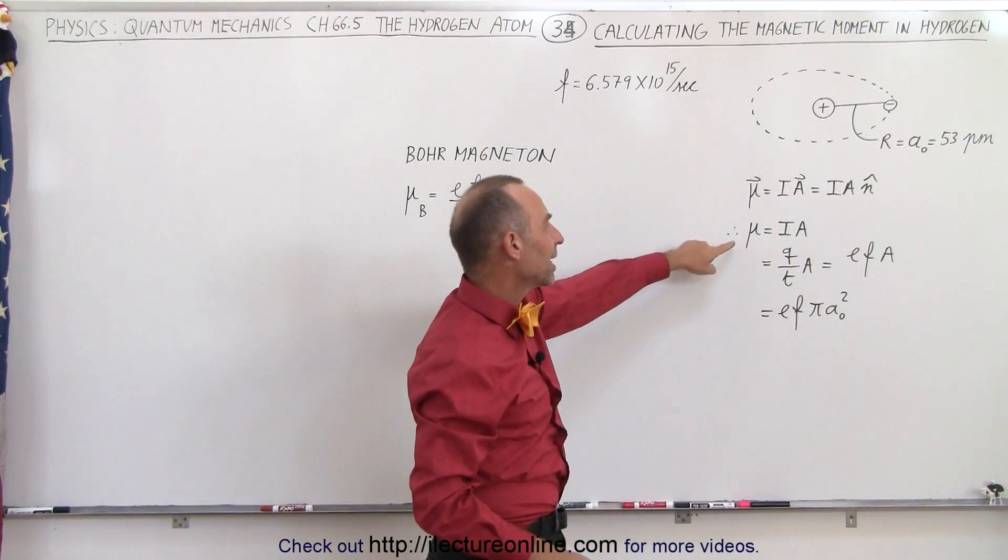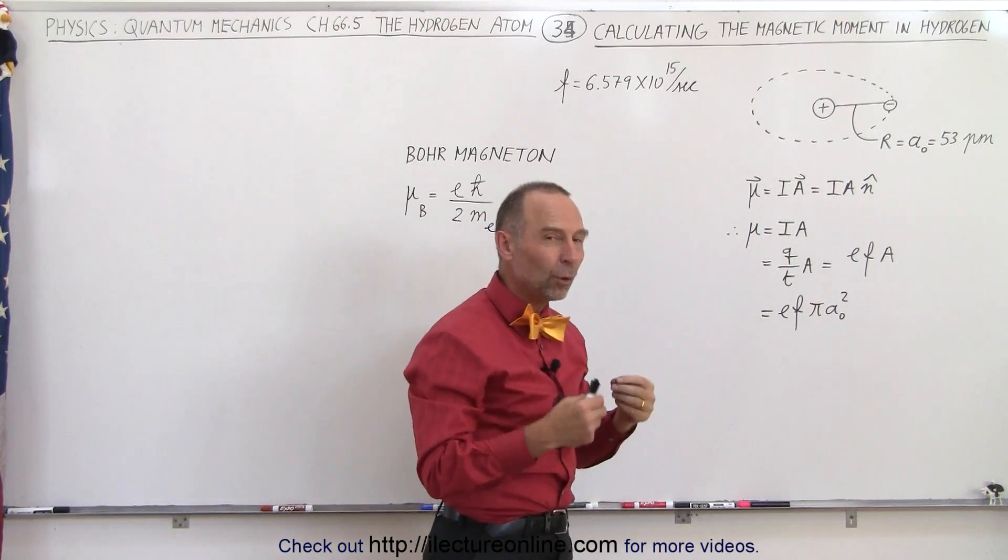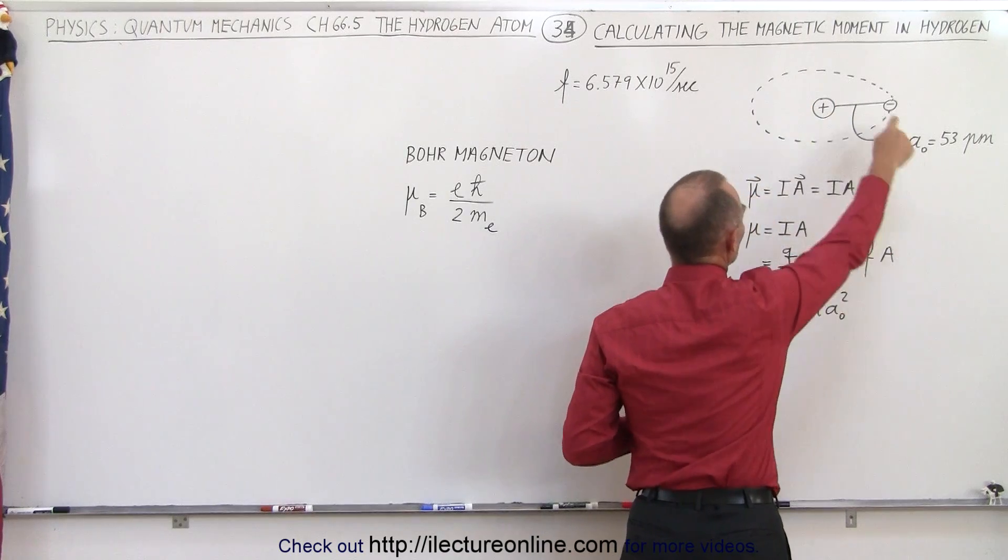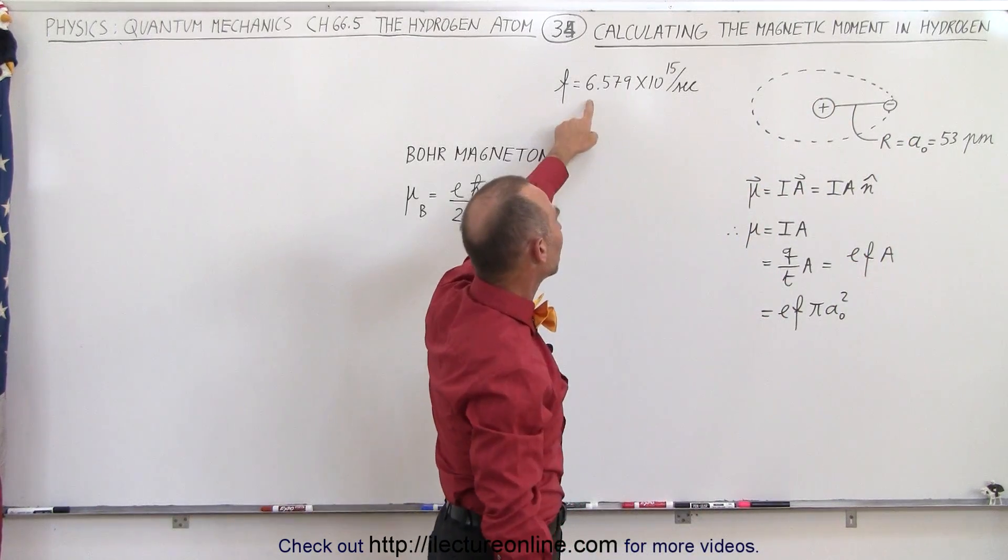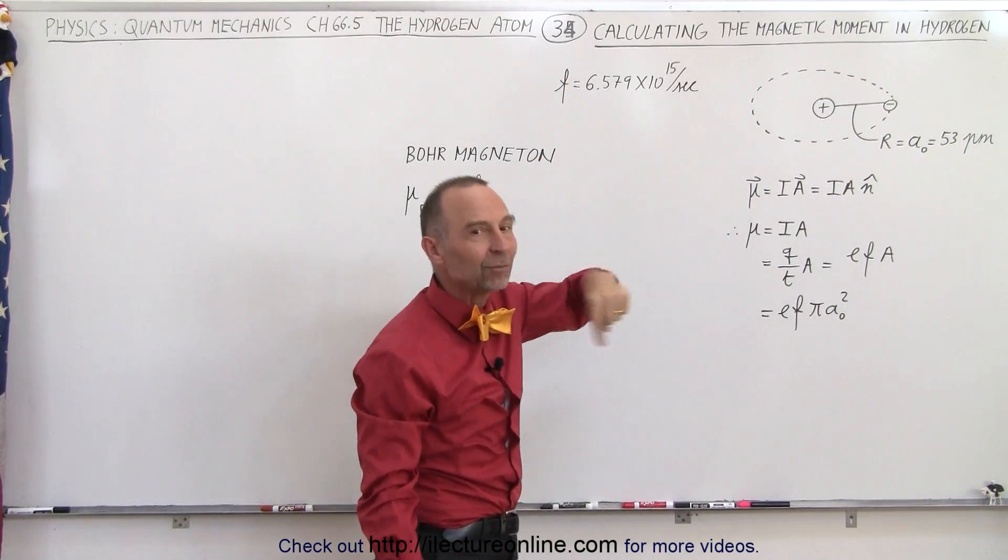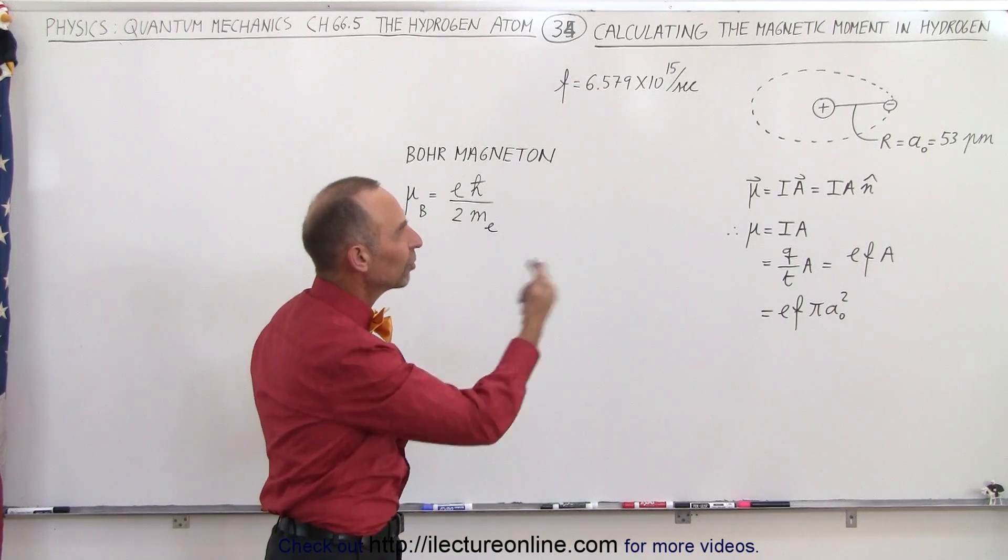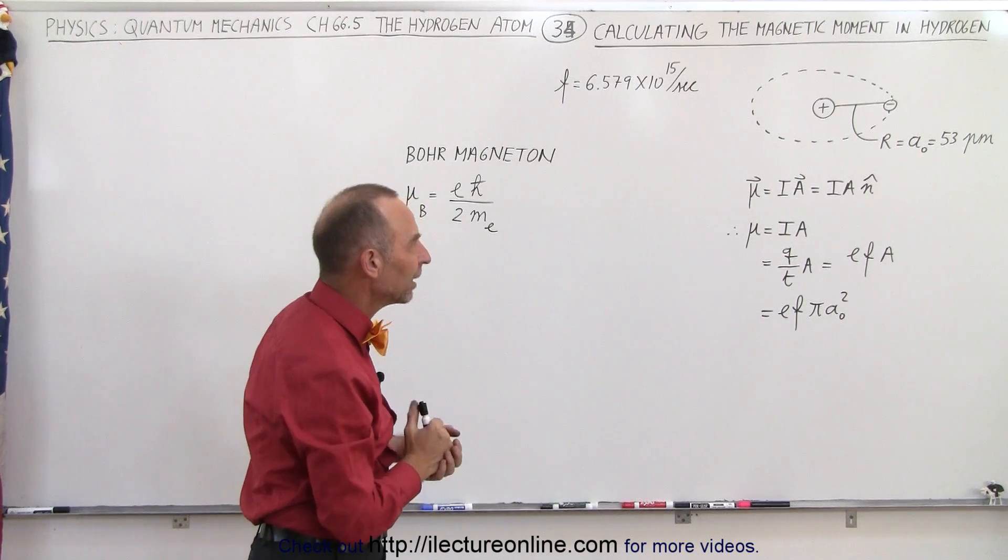So once we know that the magnetic moment is equal to the current times the area, what is the current represented by a single electron going around the nucleus many, many, many times per second? Well, the frequency is around 6.579 times 10 to the 15 rotations around the nucleus every single second for an electron in a hydrogen atom.